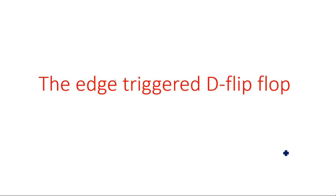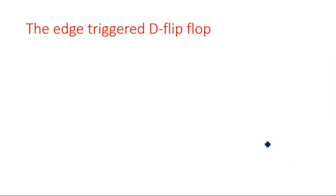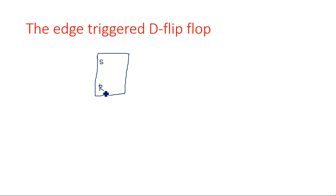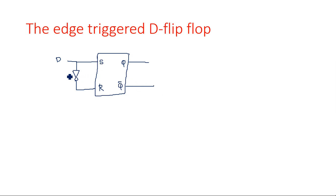In this video, I am going to explain about the edge-triggered D flip-flop. In the previous video we saw the edge-triggered SR flip-flop. Here also we are going to see the SR flip-flop — the same SR flip-flop operation — but where the SR is connected with an inverter and one input is taken as D. So internally a D flip-flop is constructed from the SR flip-flop. One input is D and the second input is connected via an inverter from the first input. These are Q and Q-bar outputs.